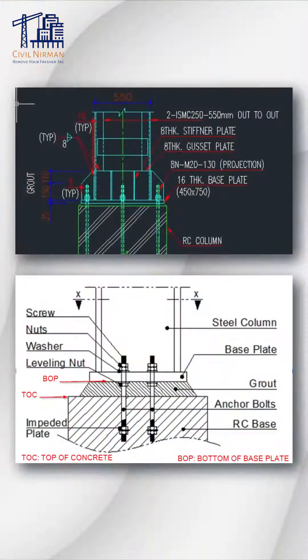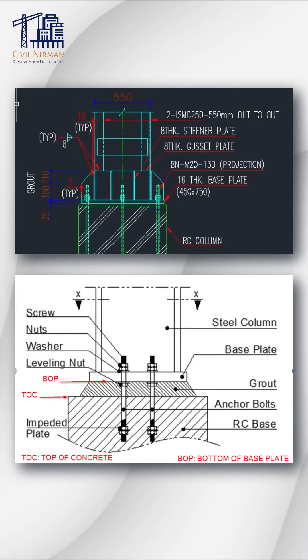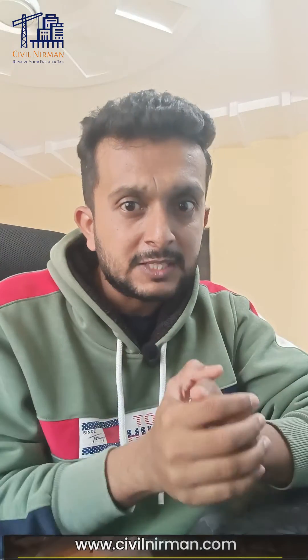Let's first start with the baseplate part. The most important things are: material grade, the pedestal sides — that is length, width, and the pedestal's height — baseplate thickness, grout thickness or the grout requirement, top of concrete, bottom of baseplate, and top of grout. Here I am talking about the level of each of these parameters.